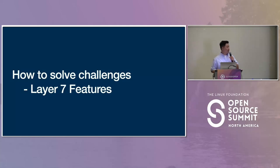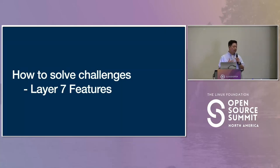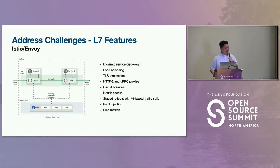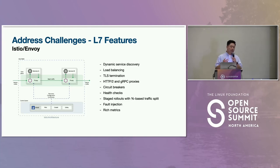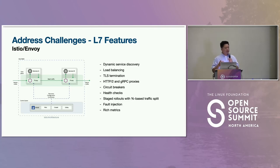Now let me explain how we provide L7 features. This is not strictly a challenge, but we wanted to show you what the load balancer we are building looks like. Istio Envoy is an open-source service mesh product with various L7 features. It is mainly used for service mesh, but we can also use it as a dynamic L7 proxy. If you are trying to build an L7 load balancer, you should definitely consider it.